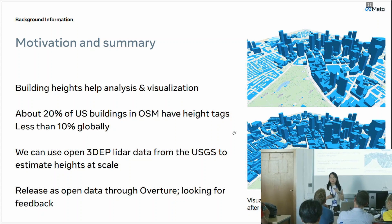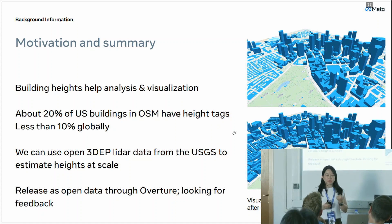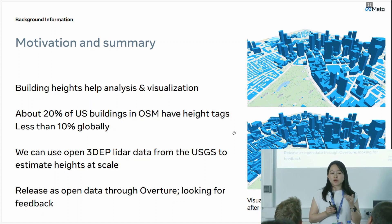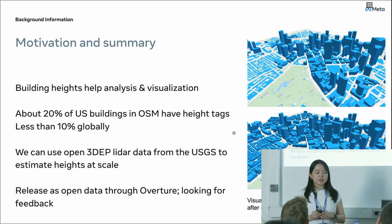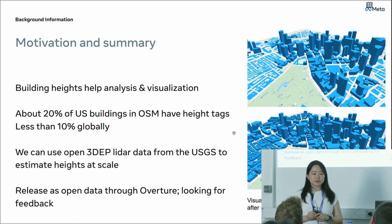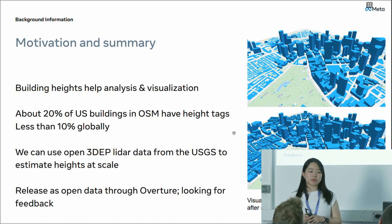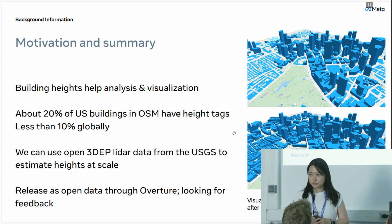We then looked around and noticed that USGS actually has a 3D elevation program which has LiDAR data that can be used. So we went with this LiDAR data to have estimated height at scale. After we produce the height data, we release it as open data to Overture. We think this data has value, but it's certainly not perfect because we started this project earlier this year, so it's still a young project. After we release to Overture, we're also looking for feedback to help improve the data.